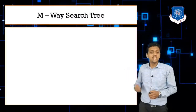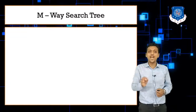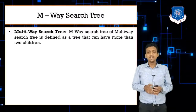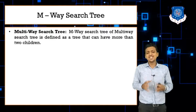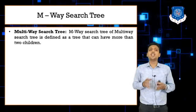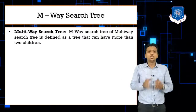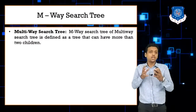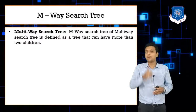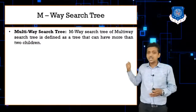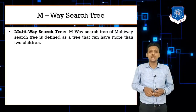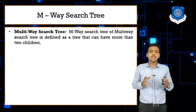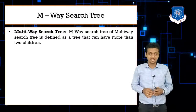In a binary search tree we have only two ways to search values, but in an M-way search tree — a multi-way search tree — you can search values in more than one way. An M-way search tree is defined as a tree which has more than two children, where each and every node contains multiple values and multiple pointers.